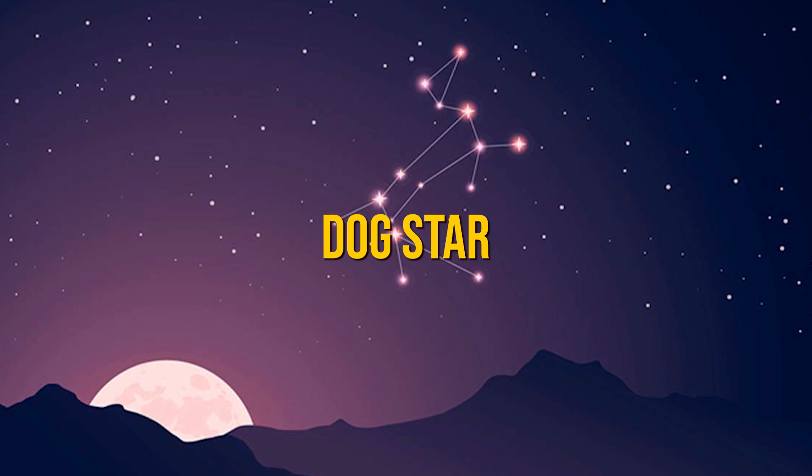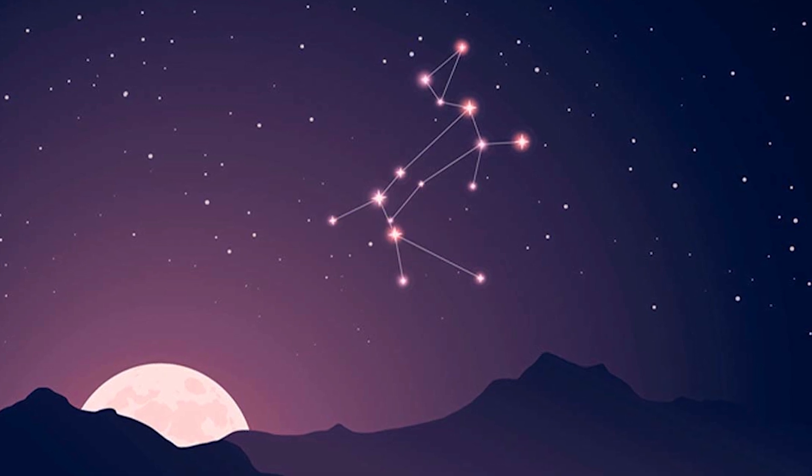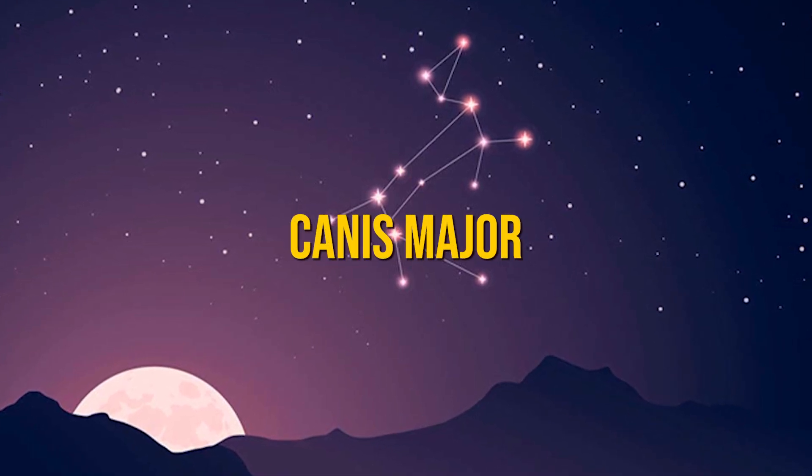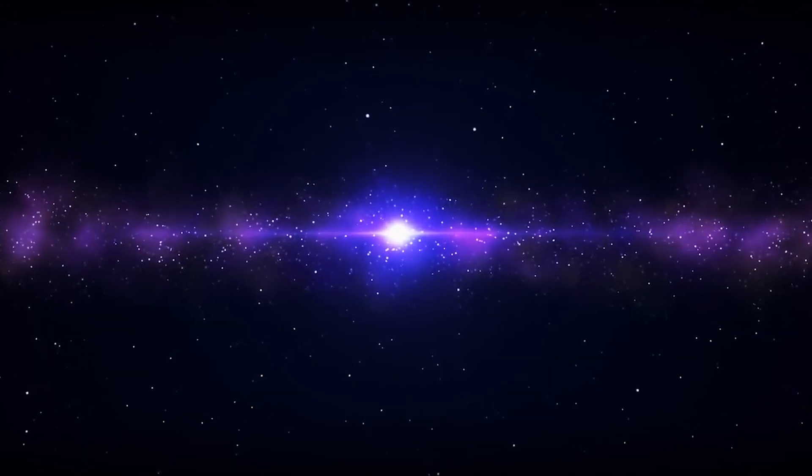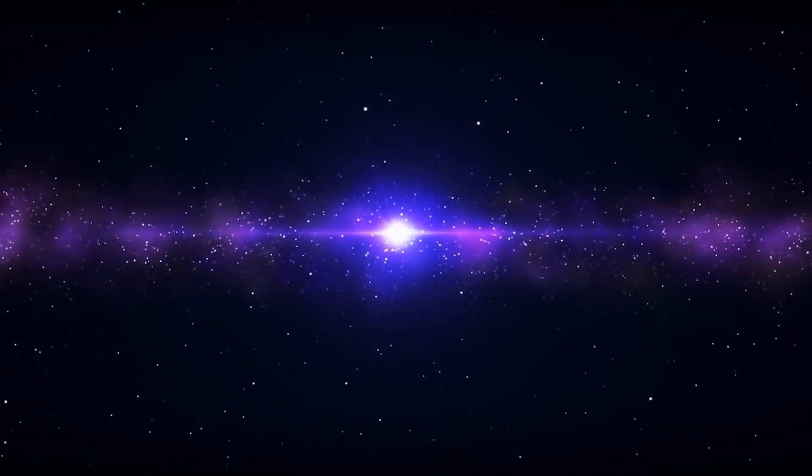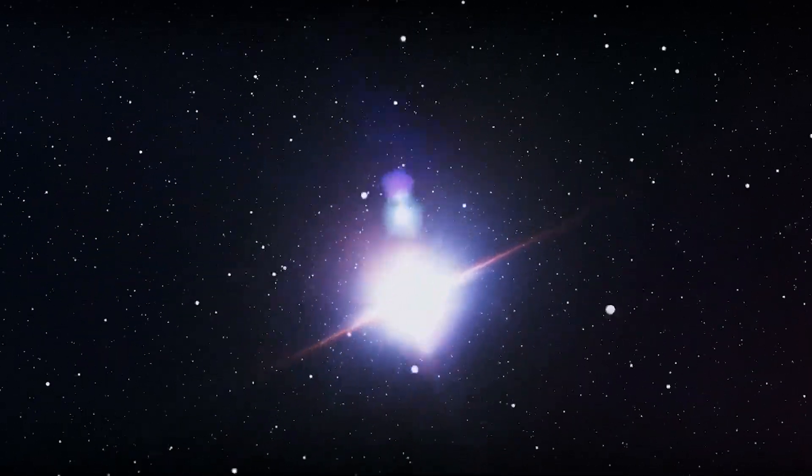Sirius, also known as the Dog Star, is located in the constellation Canis Major and is one of the closest stars to Earth at about 8.6 light-years away. It has been a prominent feature in the night sky for millennia, revered in various cultures for its brilliance.